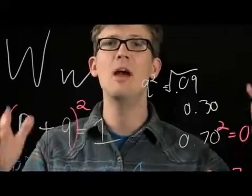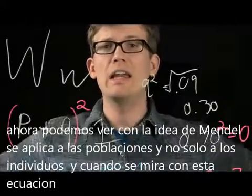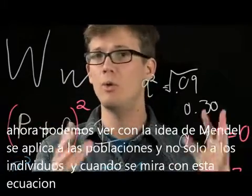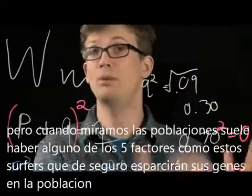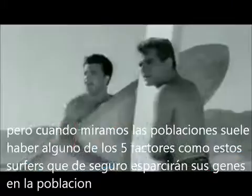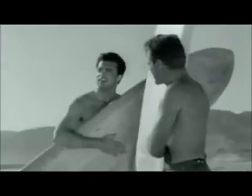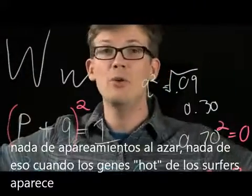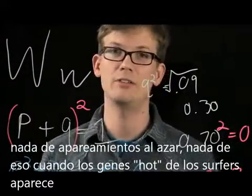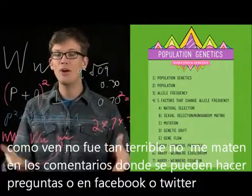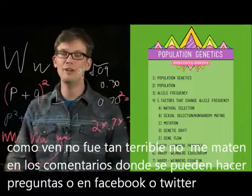What's awesome about all of this is that we can see Mendel's ideas at work in a big population. And when things aren't lining up with this equation, we know that there are one of those five factors at work — probably more than one. Like for example, a bunch of hot surfers move to the island, they all happen to have dry earwax, and they start spreading their hot surfer genes all over the place. Nonrandom mating — it always goes out the window whenever the hot surfers get involved. This stuff is pretty beautiful to me. You can ask questions in the comments, or on Facebook or Twitter.